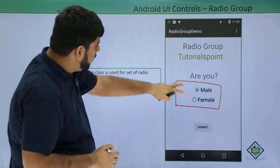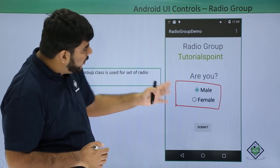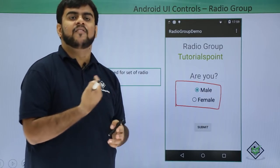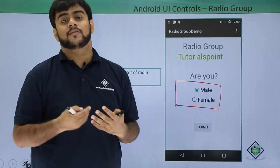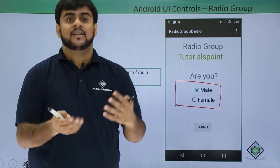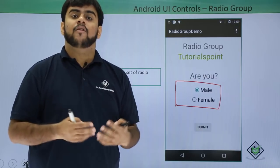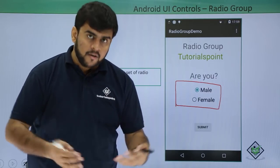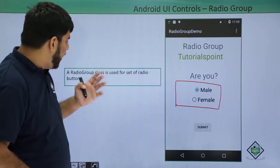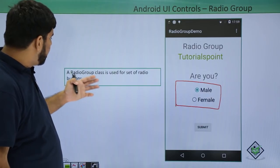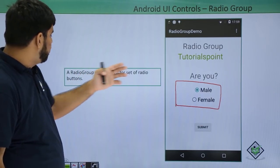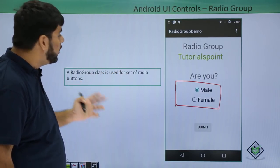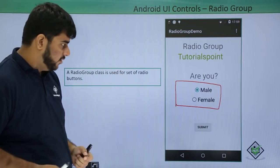We put all the buttons into a radio group so that we can easily find out which of these buttons is selected by default or which one the user has selected. A radio group is a class which is used for the set of radio buttons.